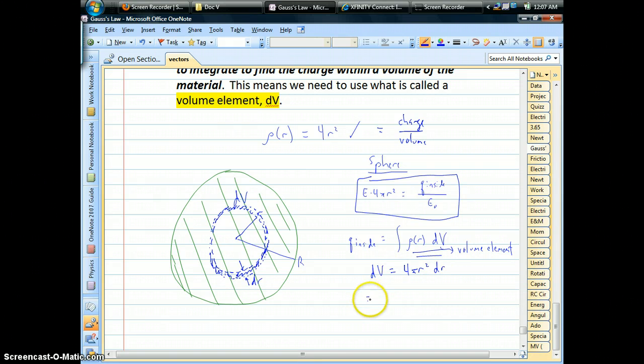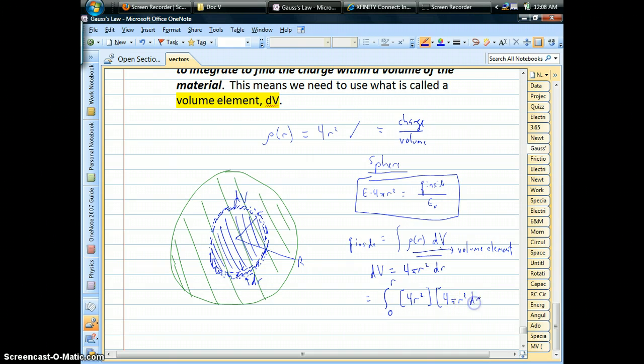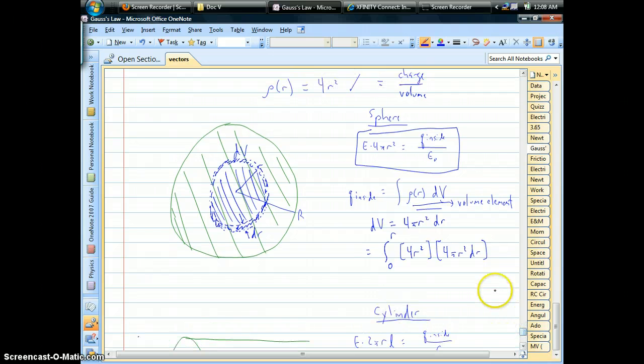So what we can do is say okay well from 0 out to little r, so that would be the shaded region within our Gaussian surface, we have our function 4 r squared times our volume element which for spheres will always be 4 pi little r squared dr. And now it just becomes a quick little bit of calculus. We're looking at the integral of what do we have 16 pi, so some constants, we have r to the 4th power dr.